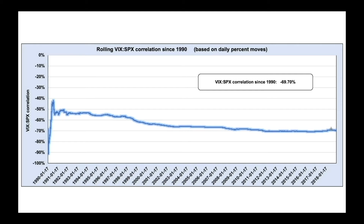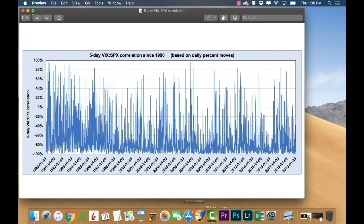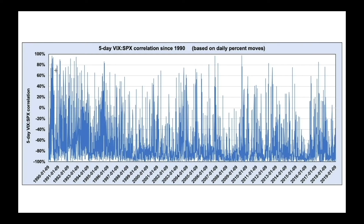But it is valuable to know that's not necessarily always the case. There are many periods, especially on a shorter time frame, where both the VIX and the S&P 500 move in tandem — they can both go up or both go down at the same time. If we break this down into just a five-day chart, you can see that on a five-day window correlations can near 100% positive, meaning every day the S&P was going up the VIX was also going up.